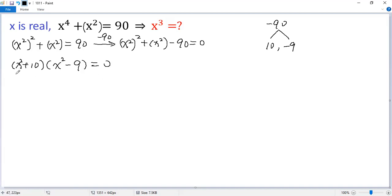So we have two cases: either the first factor equals 0 or the second factor equals 0.